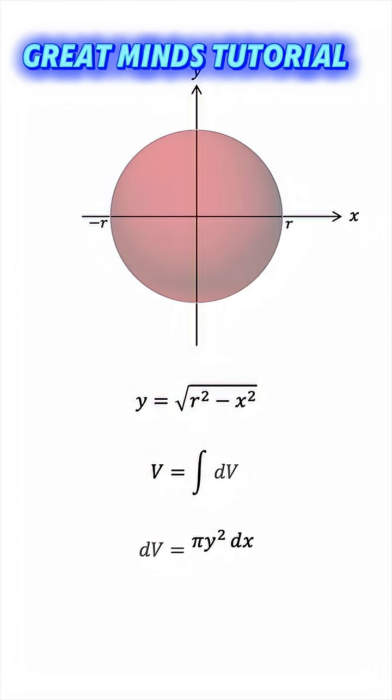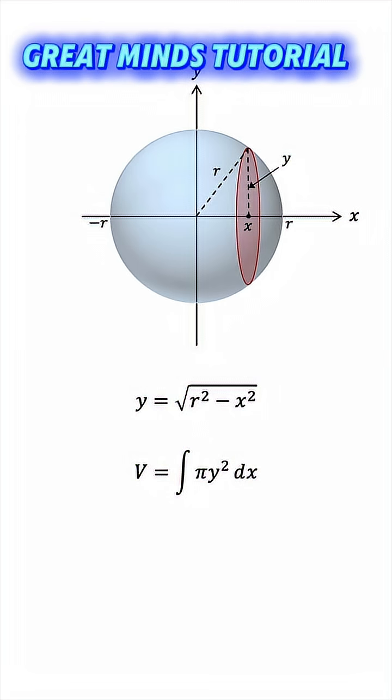So we'll integrate pi y squared dx. The bounds of integration are from negative r to r, and y squared is r squared minus x squared. This is an even integrand, so we can integrate it from 0 to r and multiply by 2.